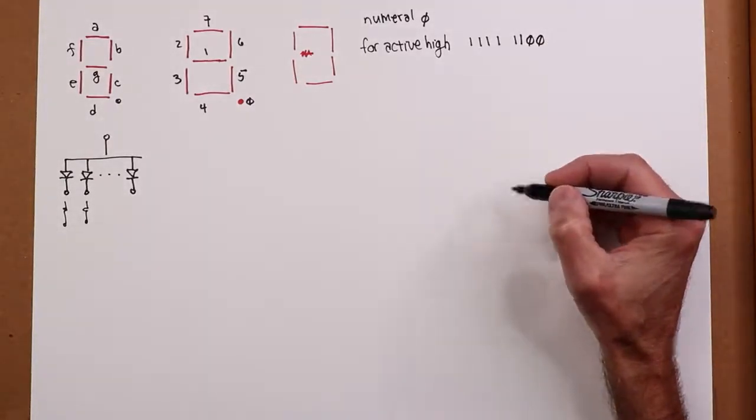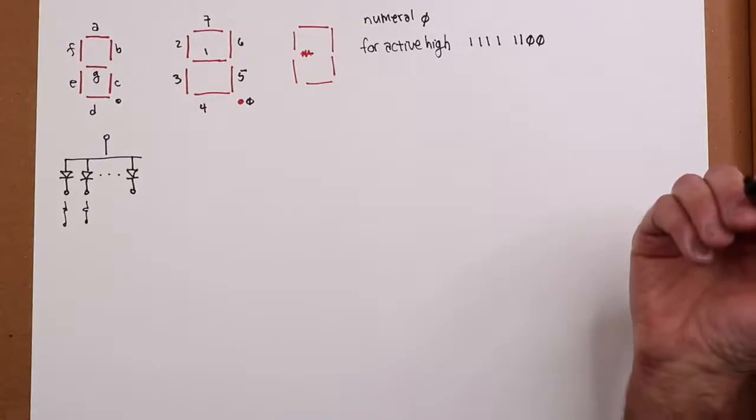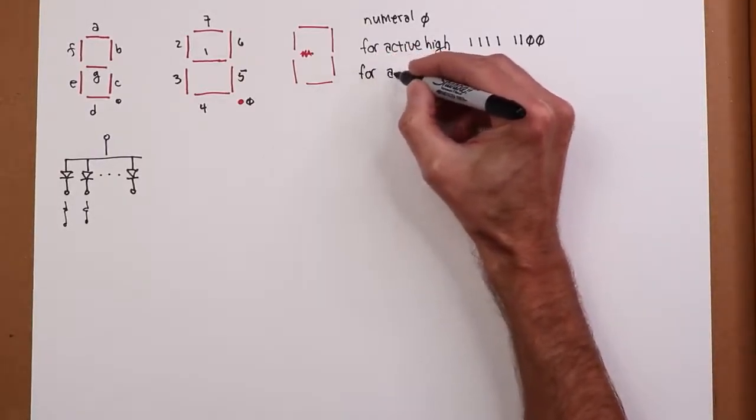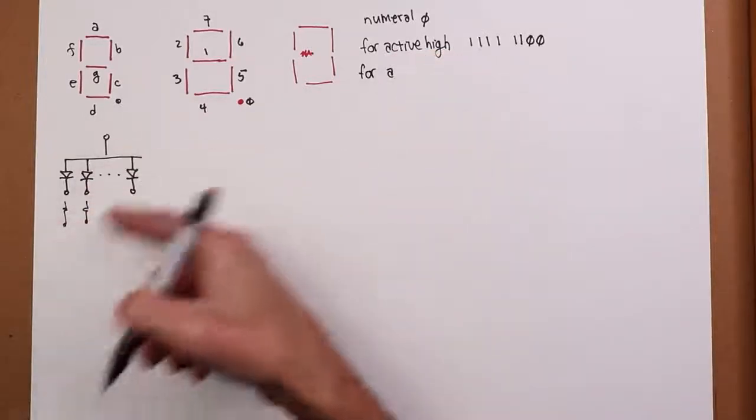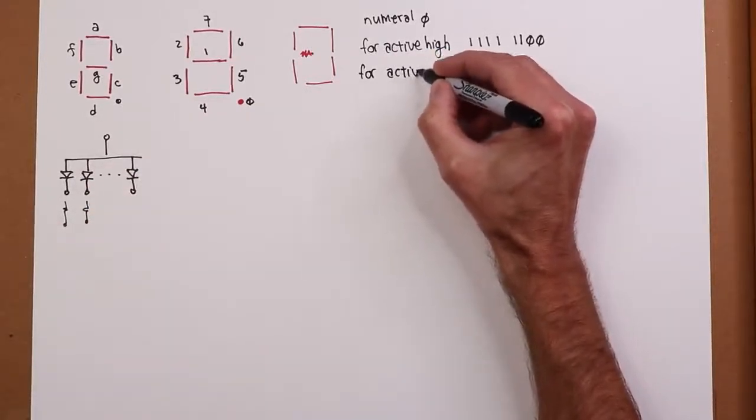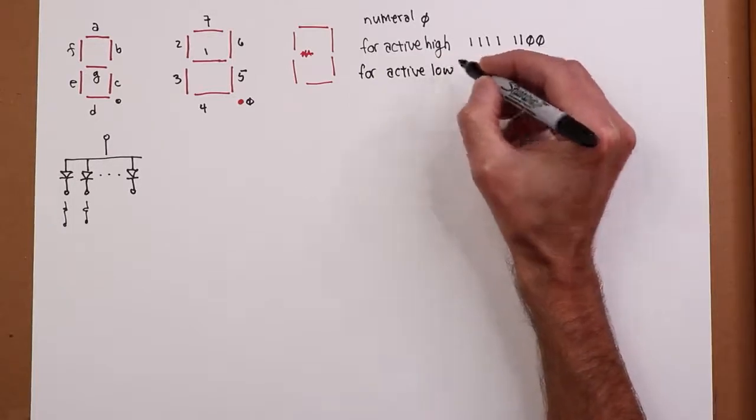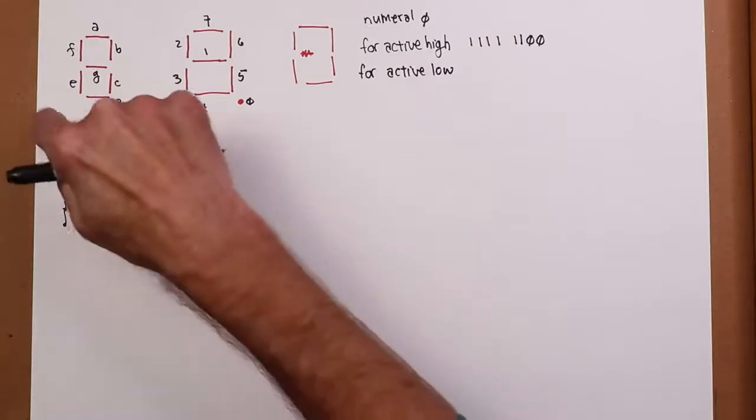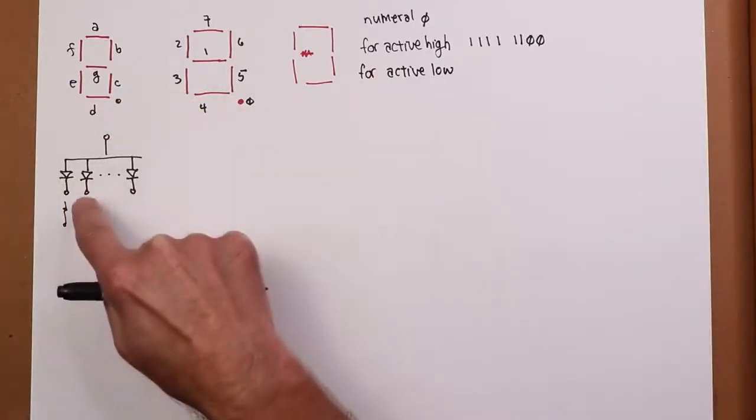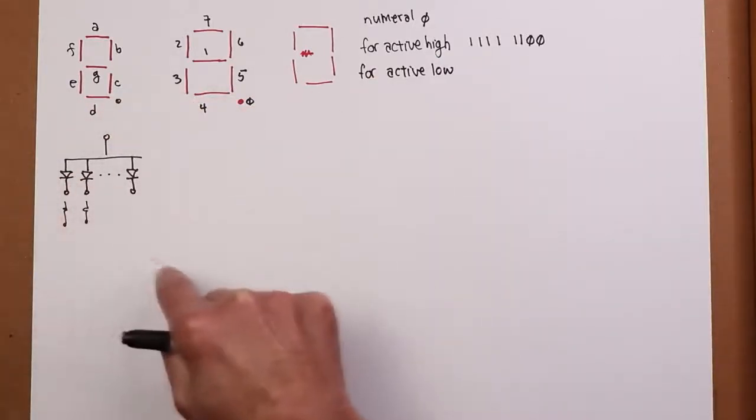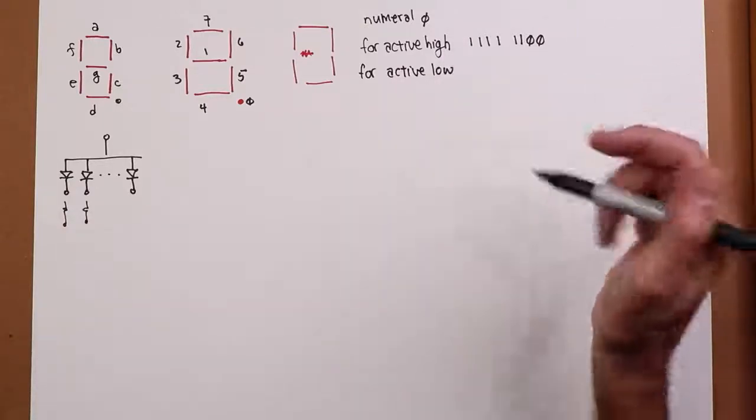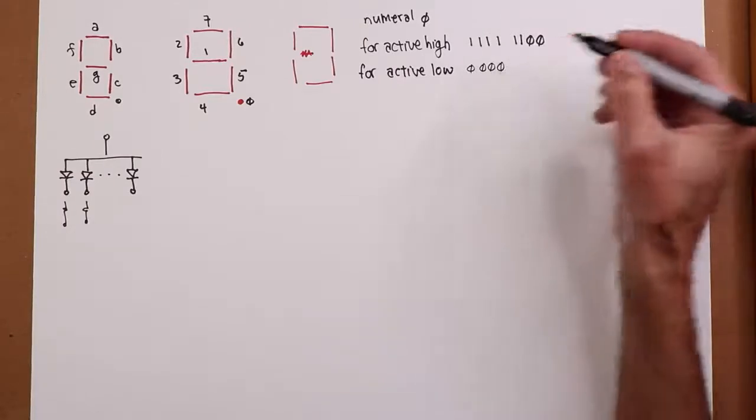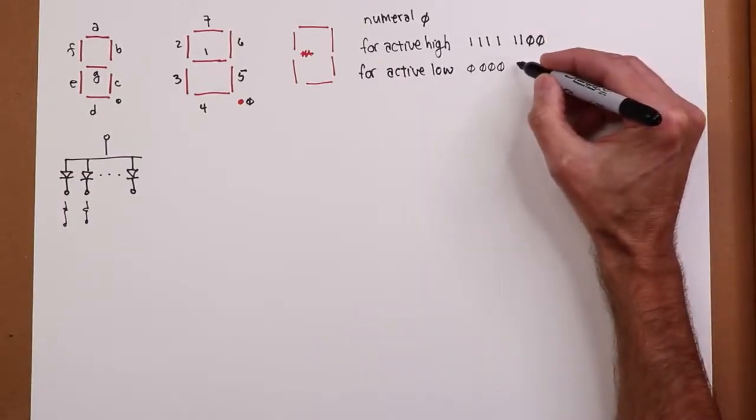Now, we could also configure this for an active low. Actually, it turns out with a common anode that's kind of convenient. If we had common cathode, of course, it'd be all tied together here, and we'd have individual items up there. So driving those high would make sense. In this case, pulling these low makes sense. So an active low is just a complement of this. Wherever there's ones, there's zeros. Wherever there were zeros, there's ones.